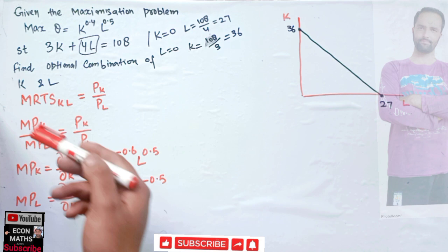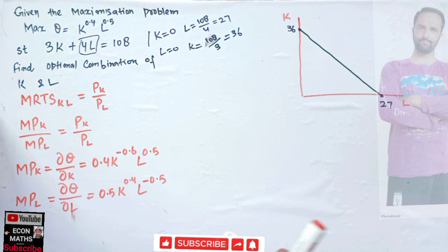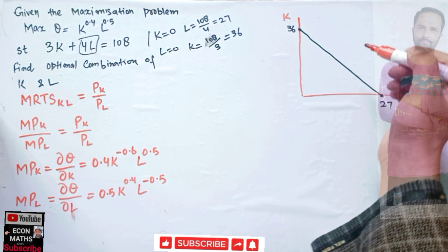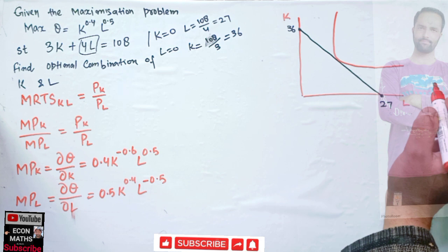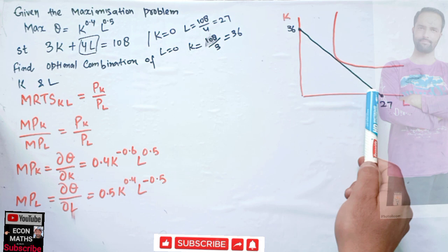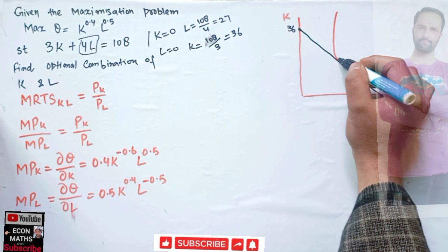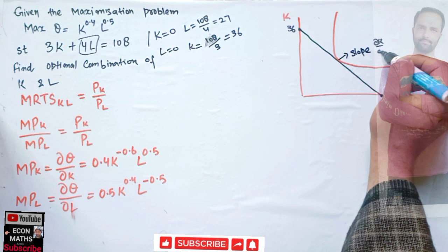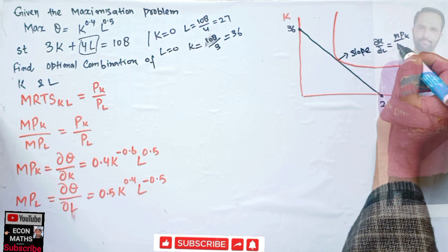The tangency condition tells us we need to find the optimal combination such that the isocost line is tangent to our isoquant. The optimality condition is when the slope of the isoquant equals the slope of the isocost line. The slope here means ∂k/∂l, which equals MPK upon MPL.